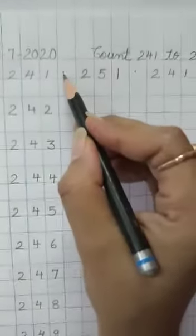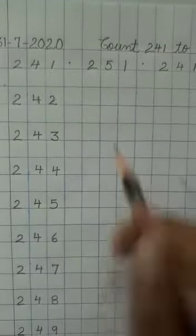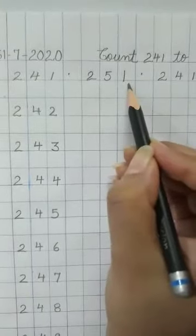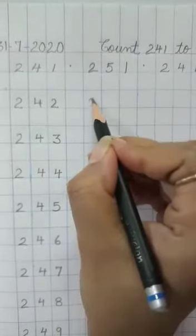Now children, put a dot here. After 250, write 251, then leave a line. Write next number.